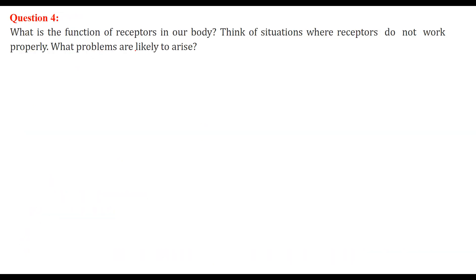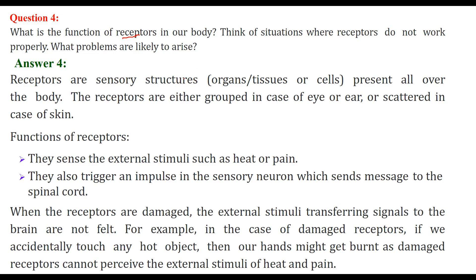What is the function of receptors in our body? Receptors, or you can say sensors, are sensory structures. They are organs, tissues, or cells present all over the body. For example, the eye receives light and the ear receives sound. They can be grouped as organs like the eye or ear, or scattered in the skin. Their basic function is to sense external stimuli like heat or pain.